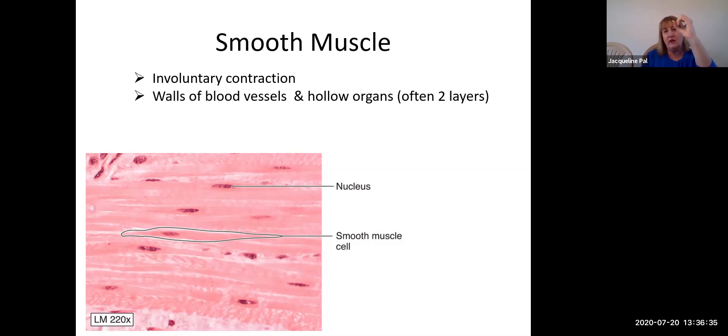So in the walls of blood vessels, it's going to go around in circles. When it contracts, the blood vessel's smaller. And in hollow organs, we still have it where it goes around to contract it this way, but we also have it going perpendicular. So when it contracts, it's moving food or whatever it is along the pathway. Maybe it is a sperm. It's moving along its pathway because yeah, that's smooth muscle in those organs as well.